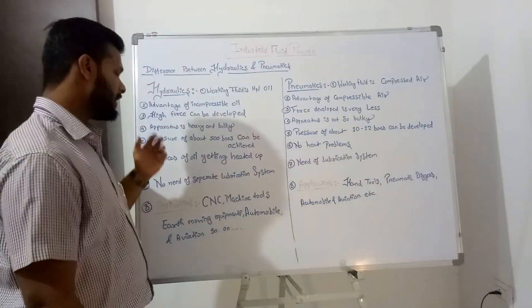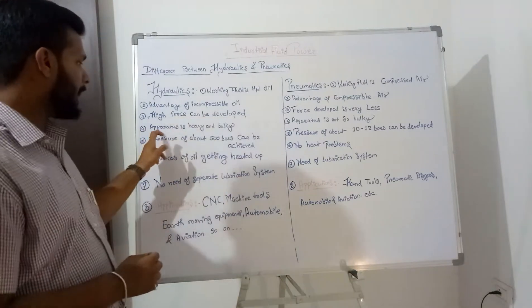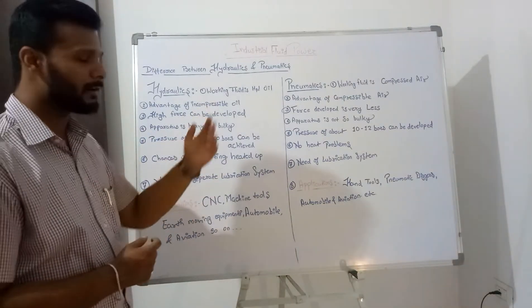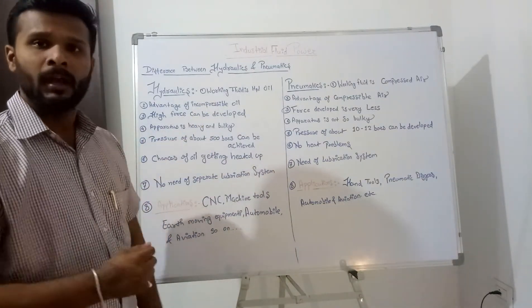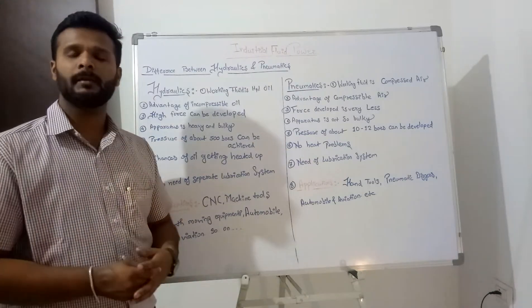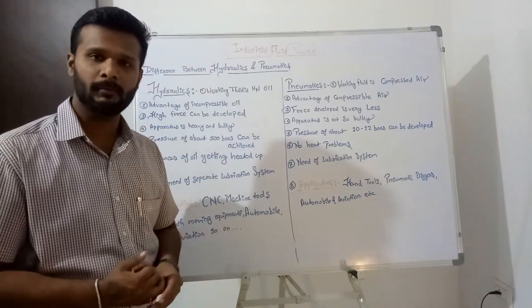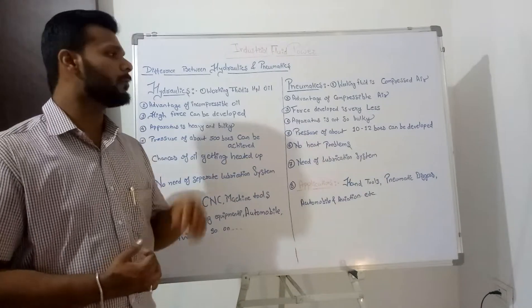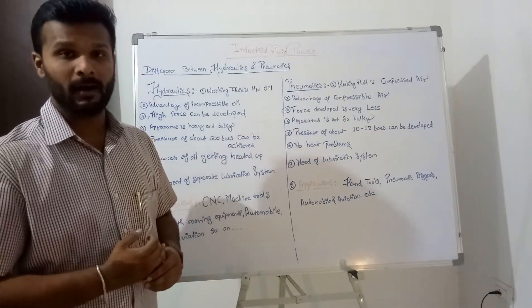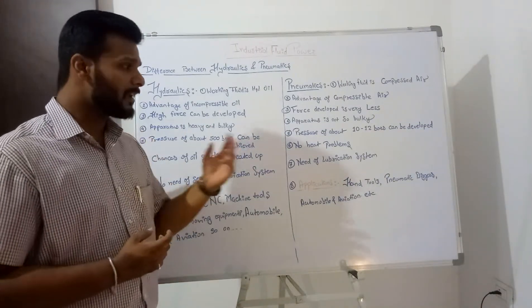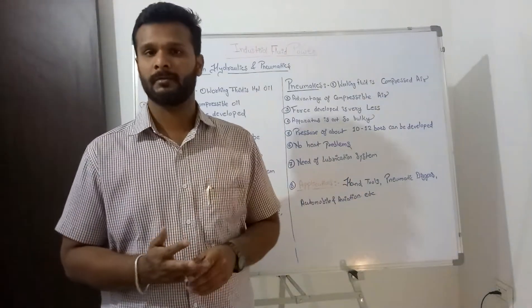Moving to the next point: the hydraulic apparatus is heavy and bulky, whereas the pneumatic apparatus is not so heavy and bulky. Regarding pressurization, the pressure can be reached up to 500 bars in a hydraulic system, whereas in a pneumatic system, the pressure can be reached up to 10 to 12 bars, and in some cases nowadays up to 14 bars.